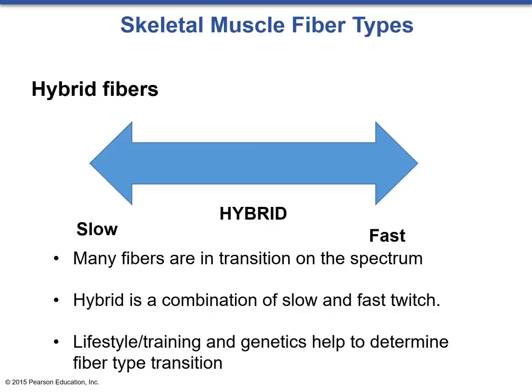While there are three primary fiber types, there are many hybrid fiber types in between slow and fast twitch. These hybrid fibers are variations and combinations of slow twitch and fast twitch fibers, called transitional fibers—they are in transition from slow to fast or fast to slow. Several factors determine fiber typing, but none more so than the type of exercise and genetic makeup.